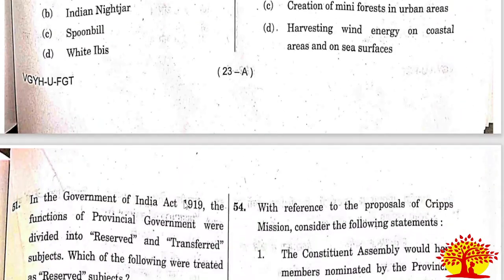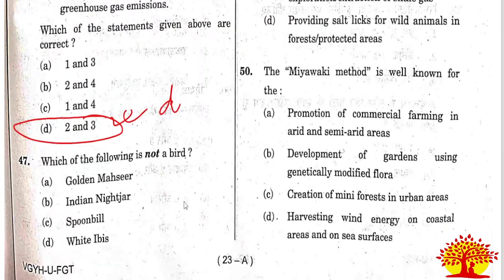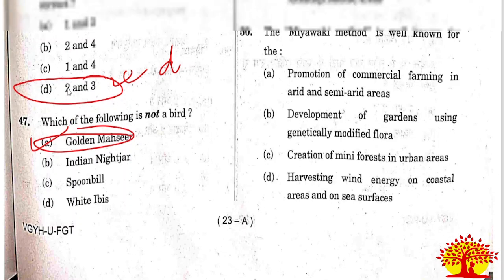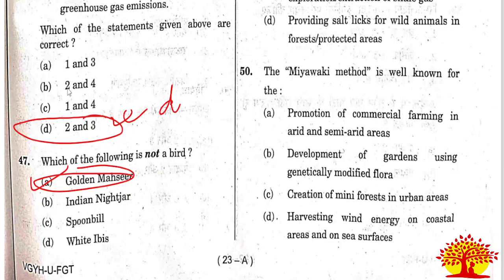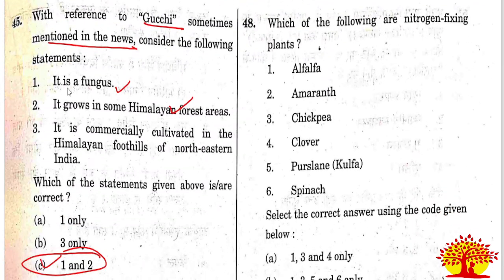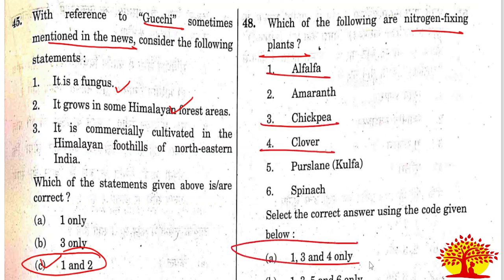Forty-seventh and forty-eighth questions on nitrogen-fixing plants: which of the following are nitrogen-fixing plants? Statements 1, 3, and 4 are correct. Option A is the right answer for the 48th question.